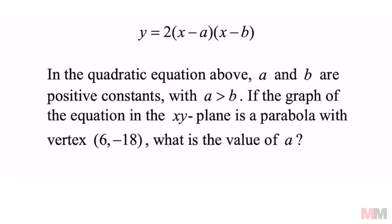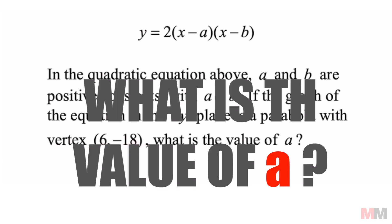In the quadratic equation above, a and b are positive constants, where a is more than b. If the graph of the equation in the xy plane is a parabola with vertex (6, -18), what is the value of a?